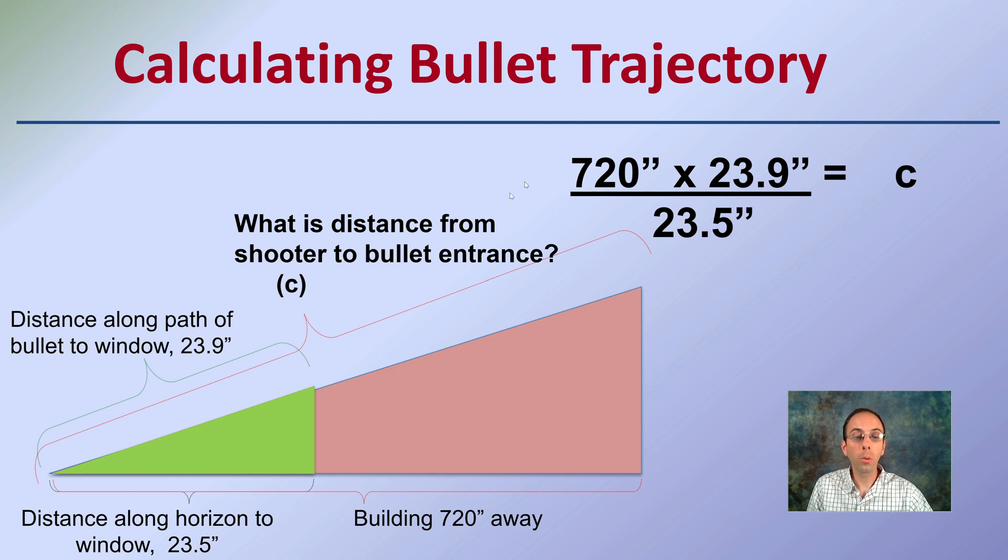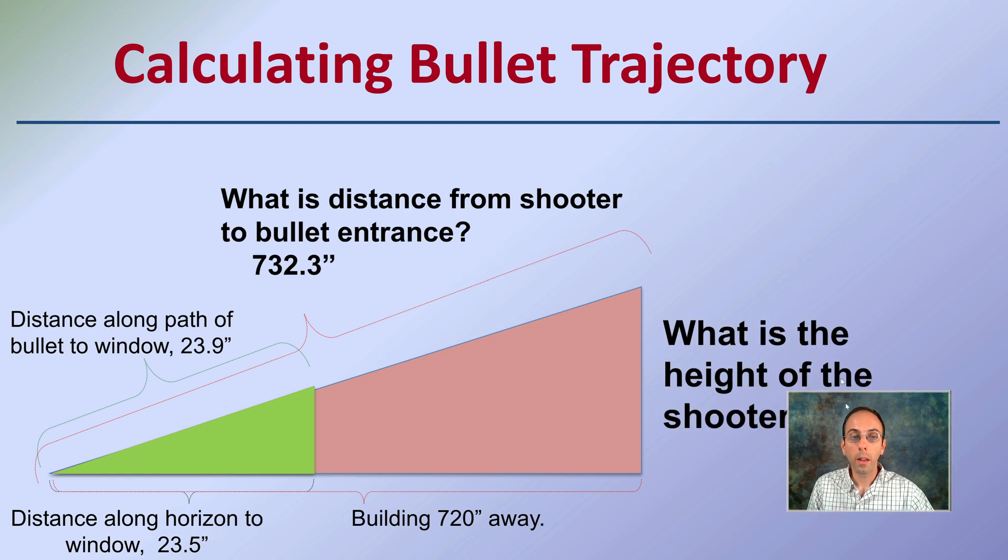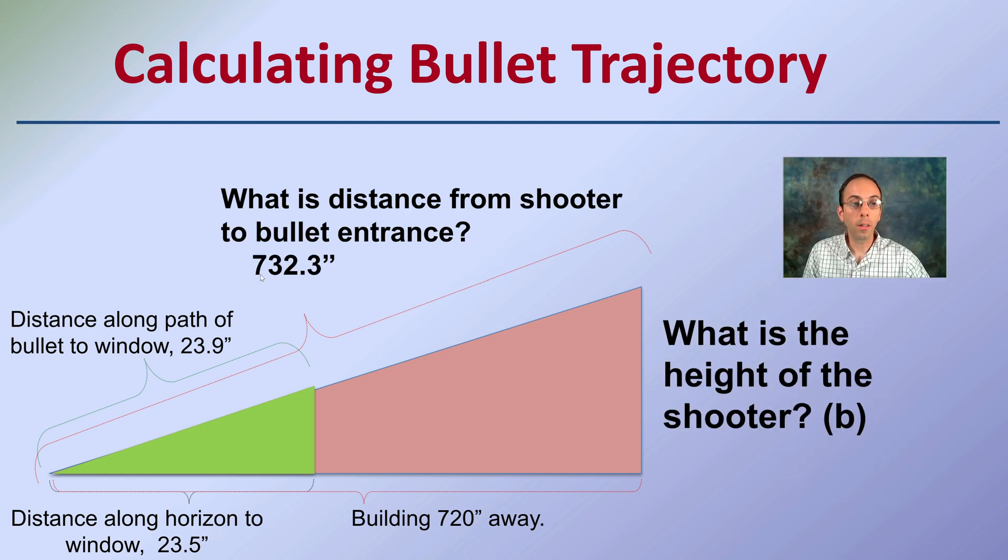So 720 times 23.9 divided by 23.5, we'll get c. And c is determined to be 732.3 inches.